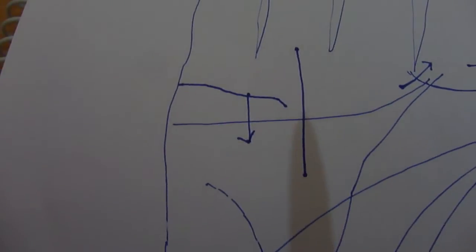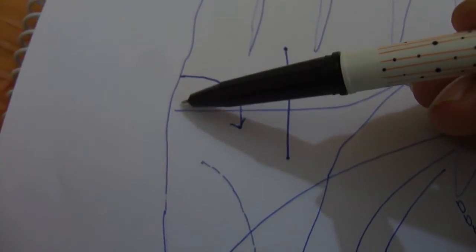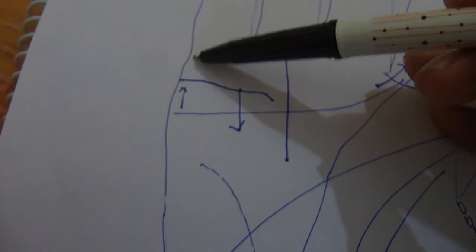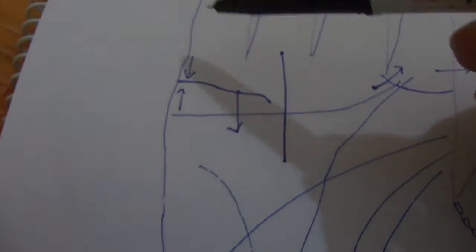The lines which come on the side of the palm are known as the relationship lines. These lines which come above somewhere here.